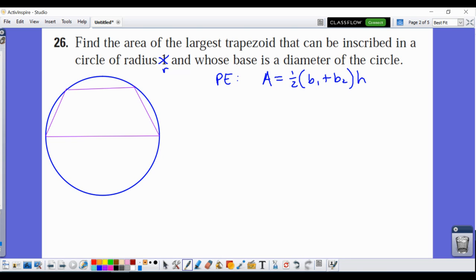Now what I need to do is find a way to connect the dimension of the circle here, the radius r, to my dimensions of my trapezoid. And there's a couple ways you can do this.